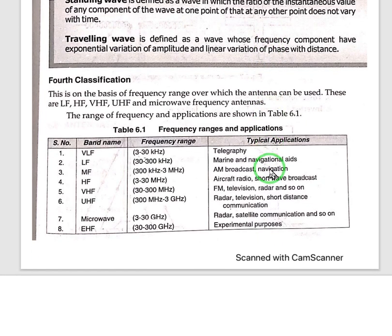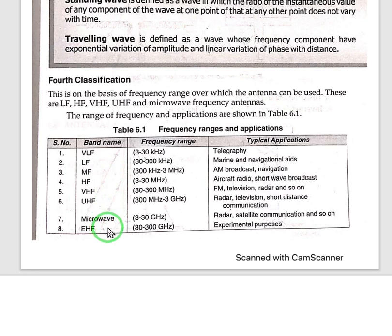The fourth classification of antennas is due to their frequency. We know that frequency is divided into different bands: VLF band, LF band, MF band, HF band, VHF band, UHF band, Microwave band, and EHF. All these categories and bands are typical for their applications.